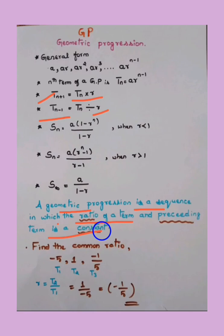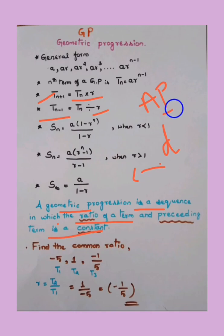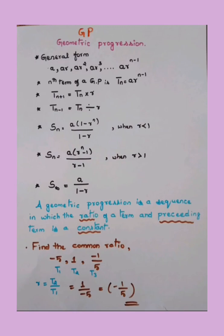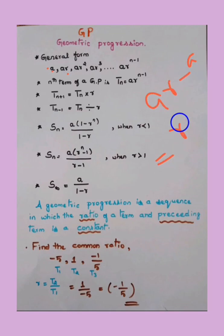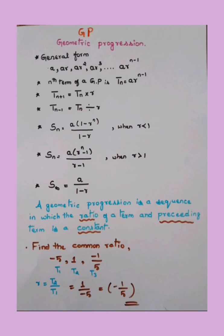In AP, the difference of a term and its preceding term is constant — if you subtract consecutive terms and get a constant, that's AP. In GP, you get the ratio of a term and the preceding term as constant. That constant ratio is called r. Here, a is the first term. For example, ar ÷ a gives r, and ar² ÷ ar also gives r — hence r is the common ratio.